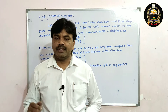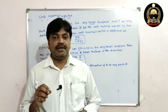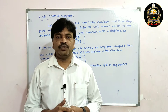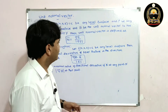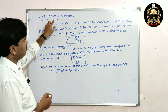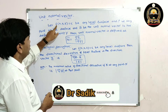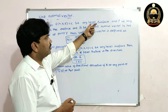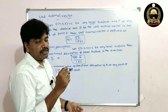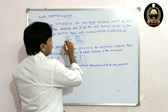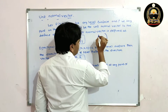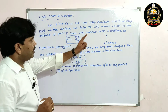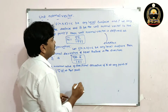Good morning friends. In this lecture I am going to discuss two definitions: unit normal vector and directional derivative. Let us see the definitions. Let f(x, y, z) = c be any level surface. We know the level surface definition — if you don't know, you can watch the previous video. Take any level surface, for example f(x, y, z) = c, and let P be any point on the surface.